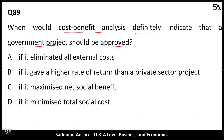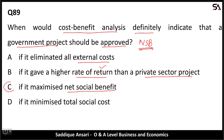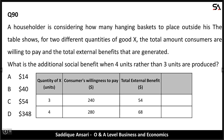Next: when would cost-benefit analysis definitely indicate that a government project should be approved? Option A: if it eliminated all external costs — government will consider benefits as well, so A cannot be the answer. Option B: if it gave a higher rate of return than a private sector project — government considers net social benefit, not rate of return, so B cannot be the answer. Option C: if it maximized net social benefit — that is the correct option because it maximizes the welfare of society. Option D: if it minimized total social cost — government considers both total social cost and total social benefit, so D cannot be the answer. C is correct.